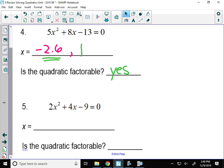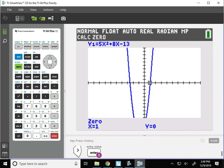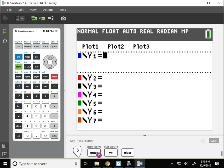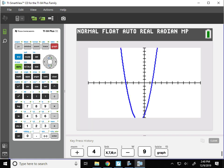Number 5, let's type this into my calculator. I have 2x² + 4x - 9 = 0.